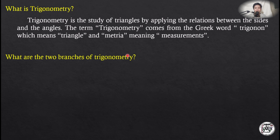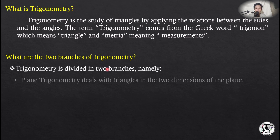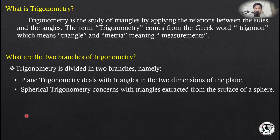So, what are the two branches of trigonometry? First is plane trigonometry, which deals with triangles in the two dimensions of the plane. The other is spherical trigonometry, which concerns triangles extracted from the surface of a sphere.